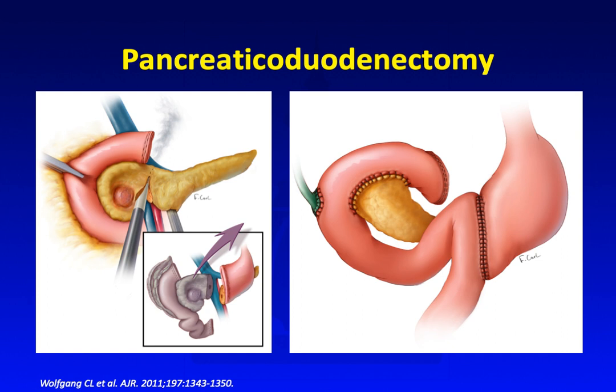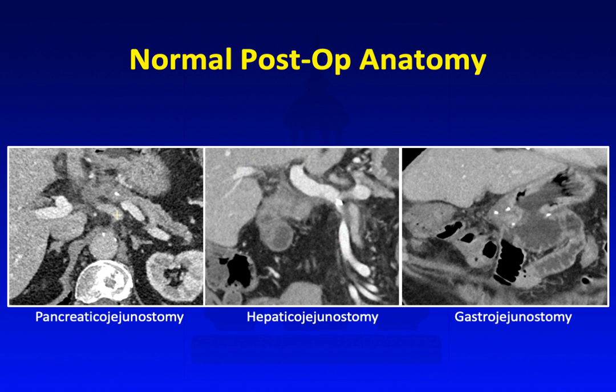Here's an image of the Whipple procedure — an en-bloc resection of the pancreatic head and duodenum. To reconstruct, you perform a pancreaticojejunostomy, a hepaticojejunostomy, and a gastrojejunostomy. In the normal post-op anatomy, the pancreatic remnant goes into the afferent jejunal limb, the hepaticojejunostomy shows normal non-dilated bile ducts, and the gastrojejunostomy connects both the afferent limb (which receives biliary input) and the efferent limb.